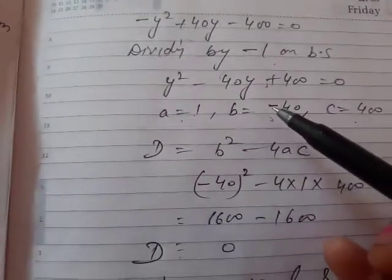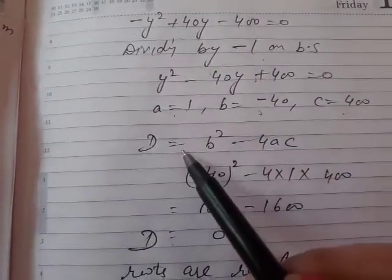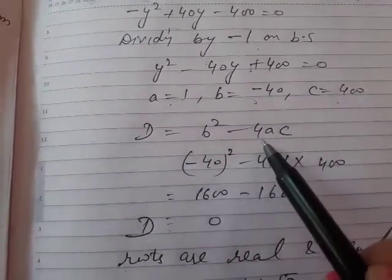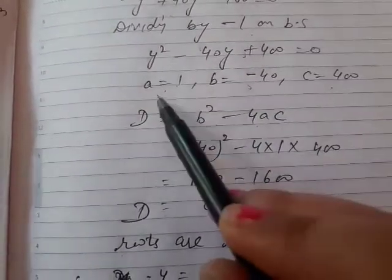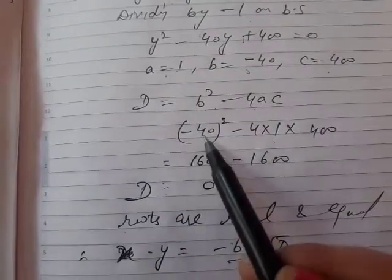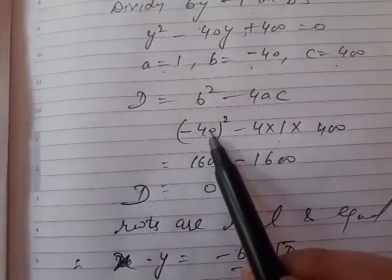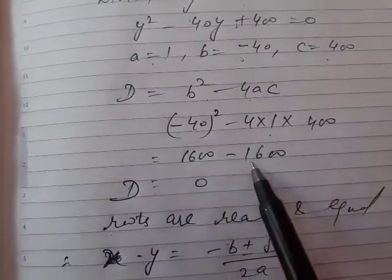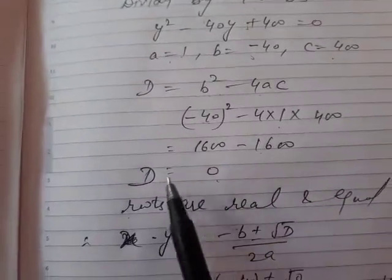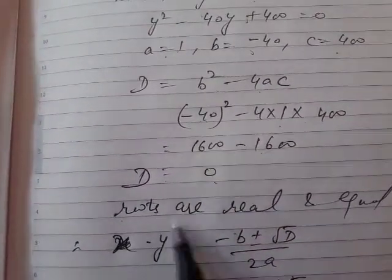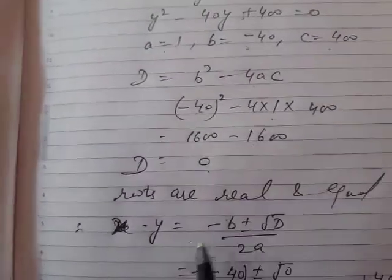So we find our discriminant D equals b squared minus 4ac. Putting the values: 1600 minus 4 times 1 times 400, that is 1600 minus 1600, equals 0. So D equals 0, it means roots are real and equal.